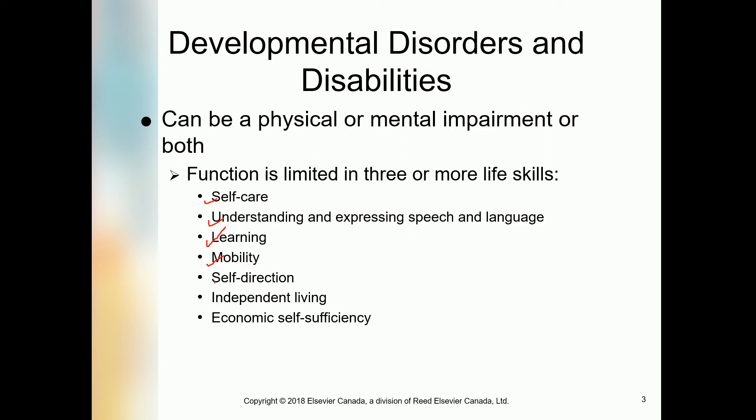Self-direction means solving problems, making choices and decisions. A person with a developmental disorder and disability cannot do many functions like problem-solving, making decisions, or making choices. Independent living requires so many things the person must do on their own, but independent living is not possible when the person has a developmental disability or disorder — somebody has to be there. This is a place where the PSW has to assist the person as per need.